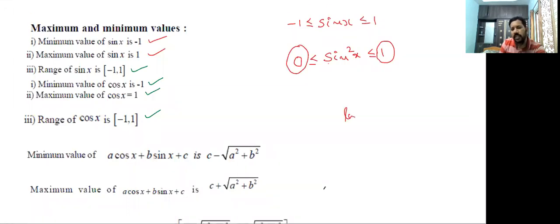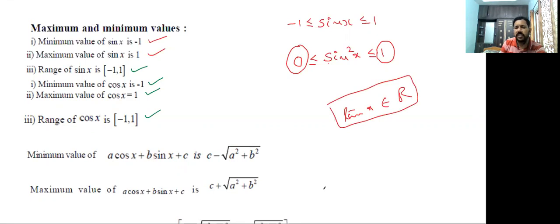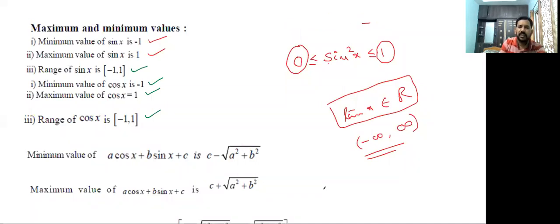What is the range of tan x? Tan x belongs to all real numbers, so the range is all real numbers — that is, minus infinity to plus infinity. Here we cannot say there is a minimum or maximum value.